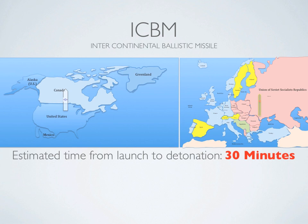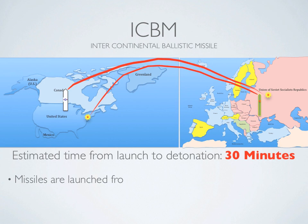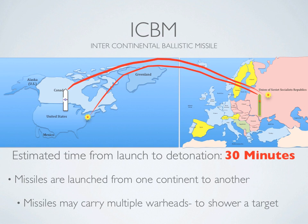An ICBM, or intercontinental ballistic missile, is a rocket that travels from one continent to another in about 30 minutes. Each missile can carry multiple warheads or nuclear bombs that allow them to shower a target with multiple nuclear bombs. It is almost impossible to stop them.